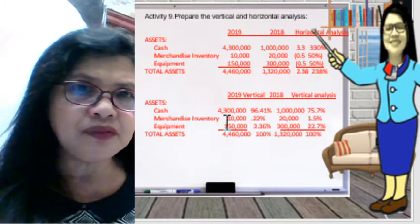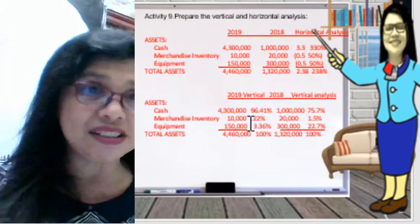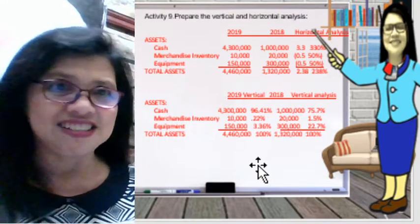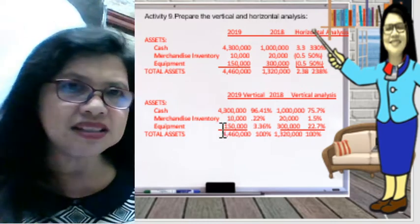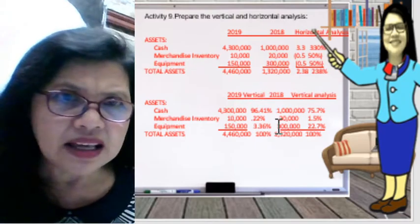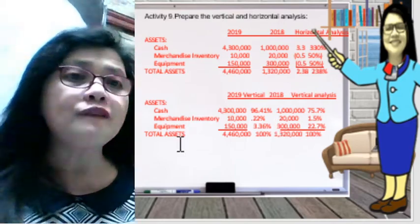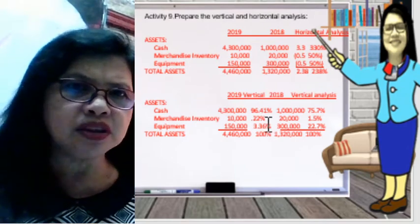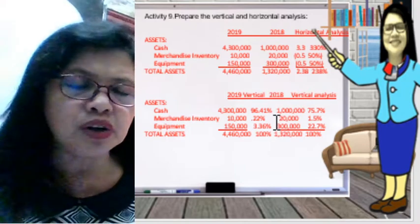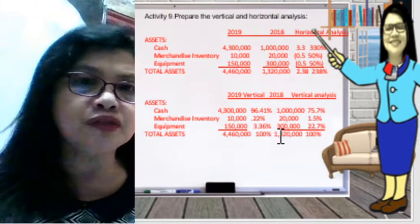Merchandise inventory of 10,000 divided by total assets of 4,460,000 gives 0.22% — so the merchandise inventory is only 0.22% of total assets. Equipment is 150,000 divided by 4,460,000, which equals 3.36% of total assets. When you sum all the percentages, you get 100%.